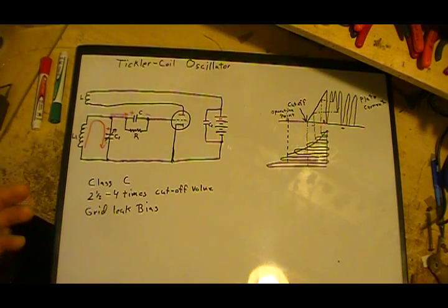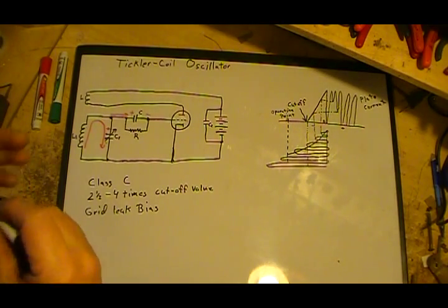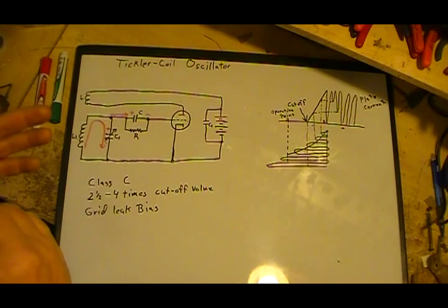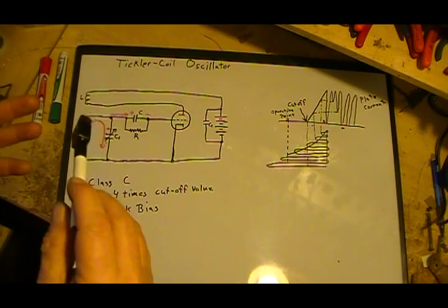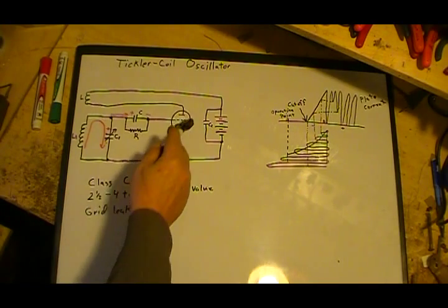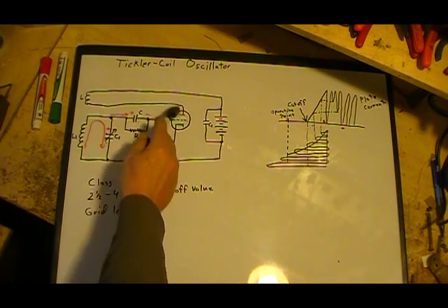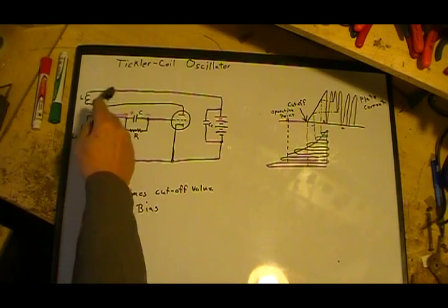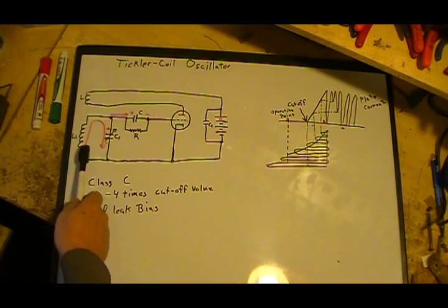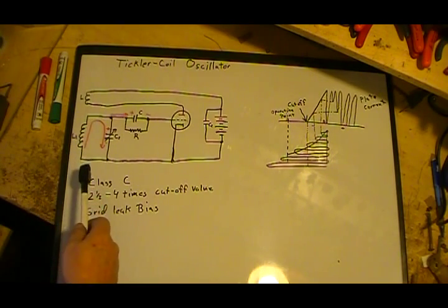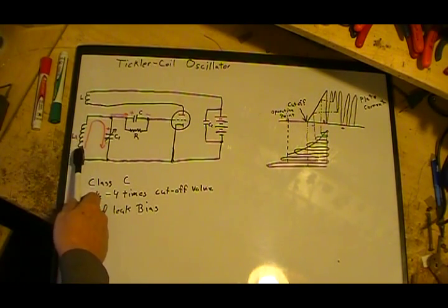As the tube approaches saturation, it starts leveling off. It stabilizes, so there will not be any more increase in the current going in the plate circuit. At that point, the magnetic field stops expanding.